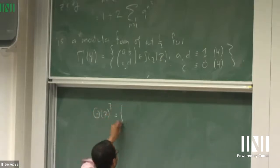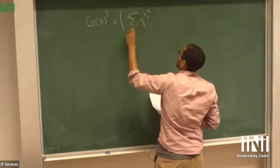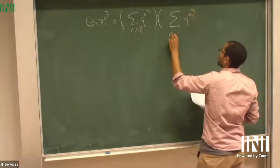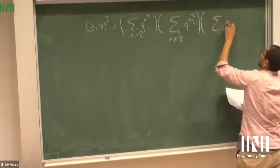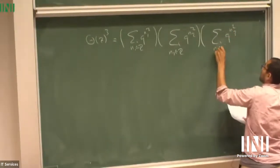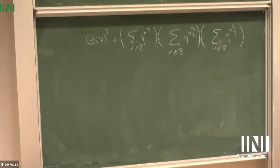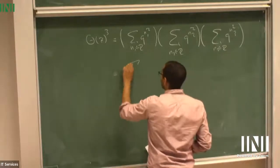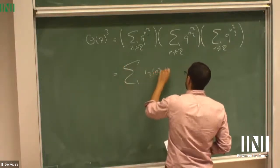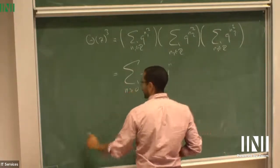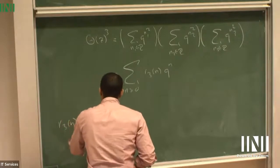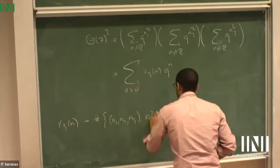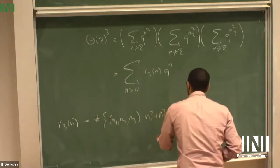The Q expansion of theta of Z cubed is the sum over N1, N2, N3 in Z of Q to the N1 squared times Q to the N2 squared times Q to the N3 squared. The Fourier coefficient of Q to the N is the number of ways you can write N as the sum of three squares. R3 of N is the number of ordered three-tuples N1, N2, N3 such that N1 squared plus N2 squared plus N3 squared equals N.